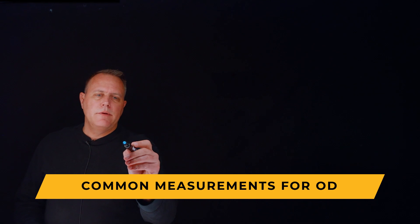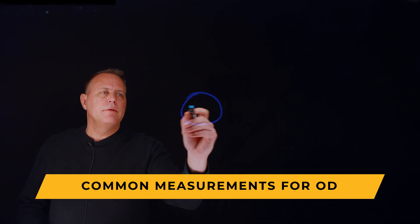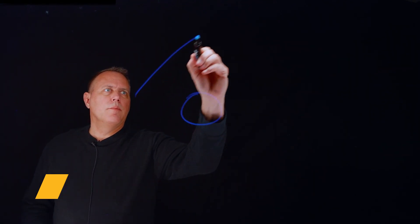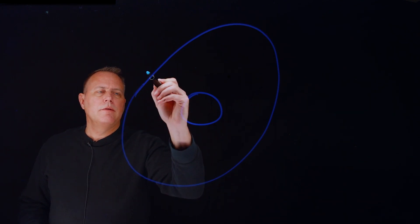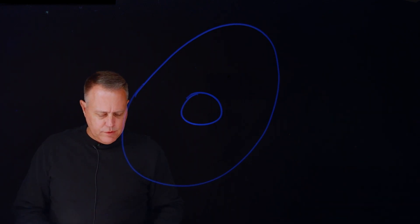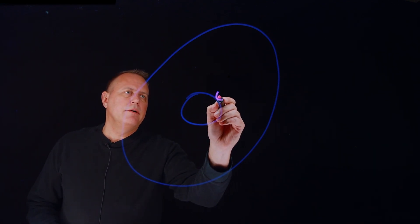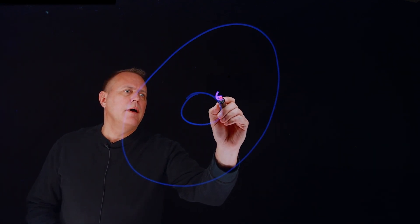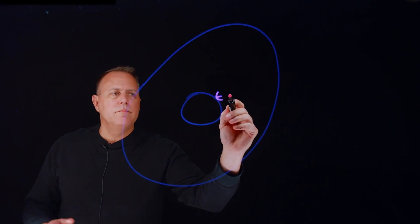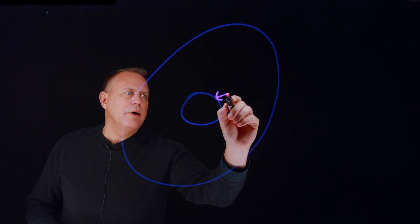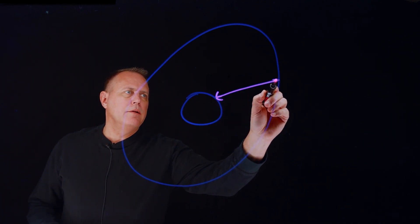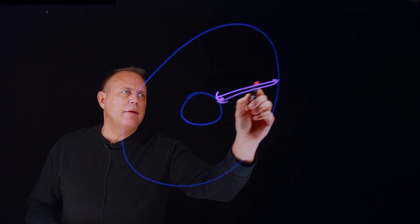So imagine I've got my earth, I've got my orbit around the earth, and what I want to do is measure where my satellite is. So I've got my ground station right here, and let's say it's a radar, and I send a signal out, bounce it off the satellite, and then the signal comes back.